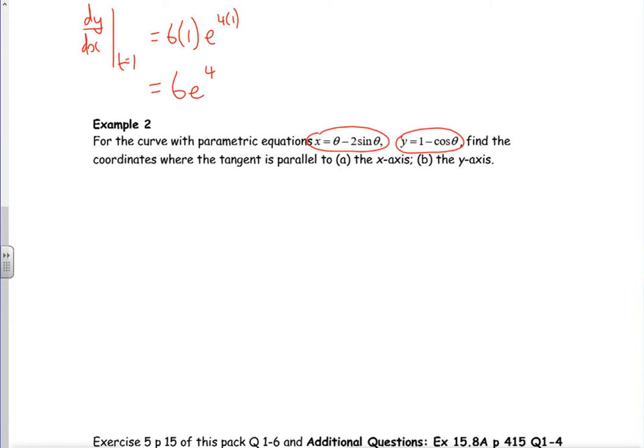Find the coordinates where the tangent is parallel to the x-axis. Then so I'm looking where the tangent has a gradient of—oh no my god, misread that—not parallel to the x-axis, parallel to the x-axis and tangent is parallel to the y-axis. Right, okay, let's differentiate it first then.